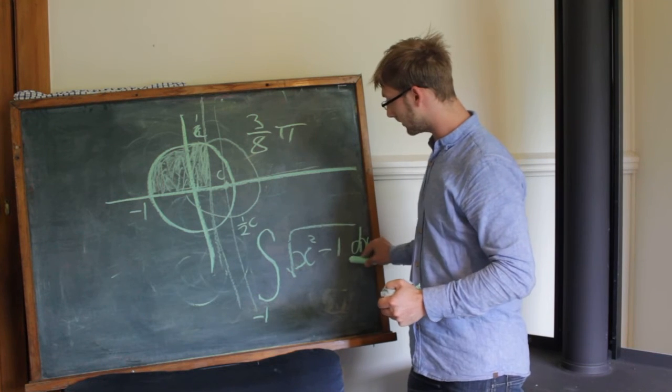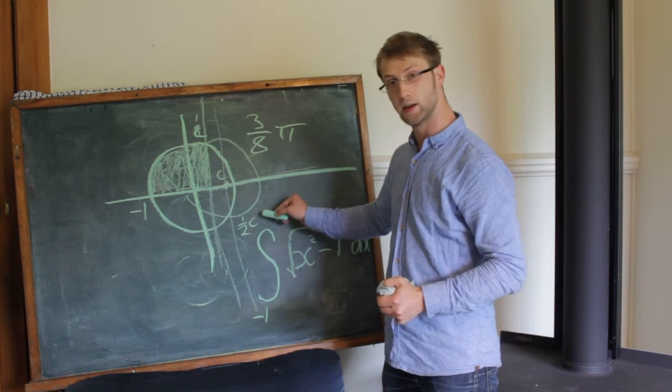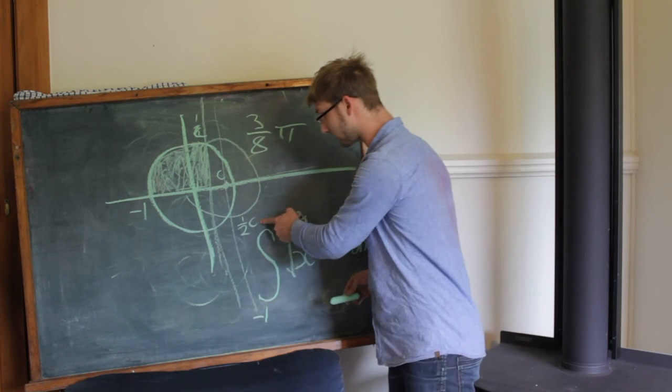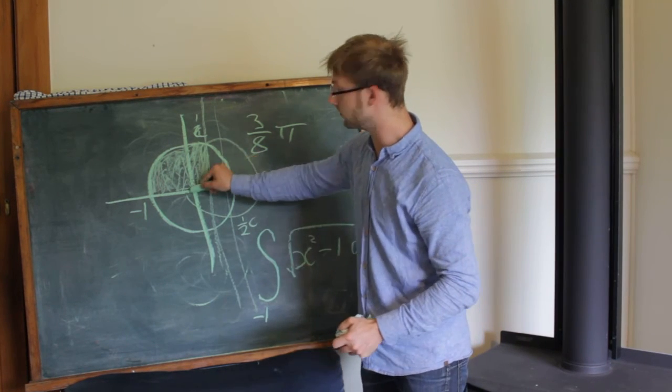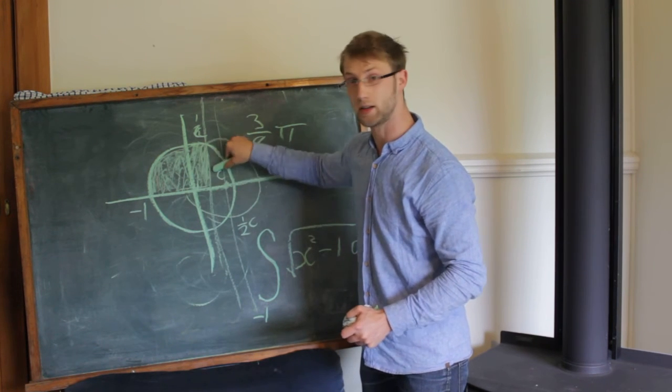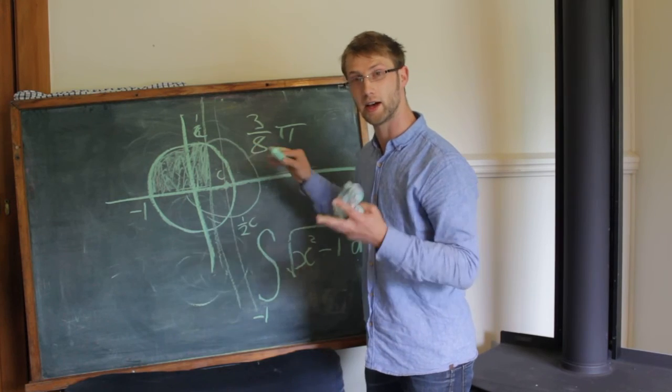So if you solve this integration problem from the boundaries minus one to half of C, and you put this into a computer and solve for C, that will give you the distance between the centres of the circles so that the intersecting area and the two outside areas are the same.